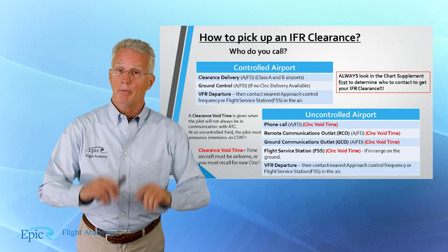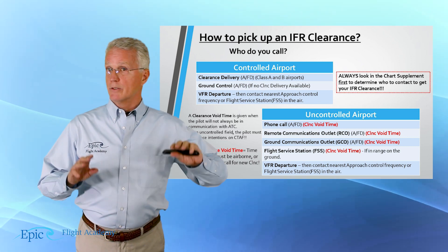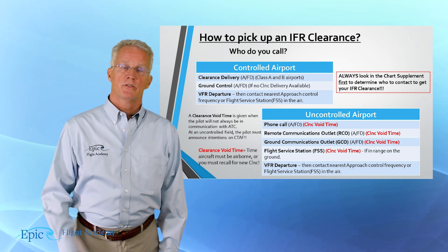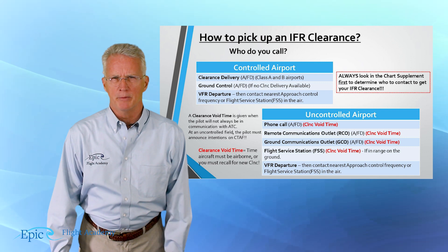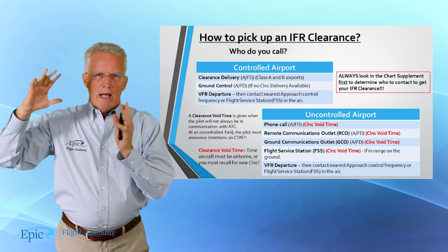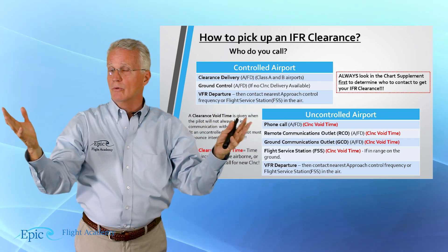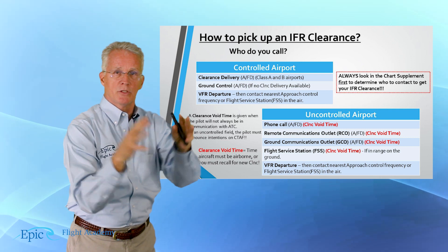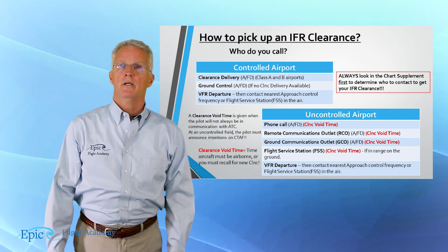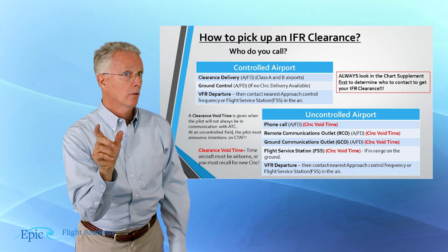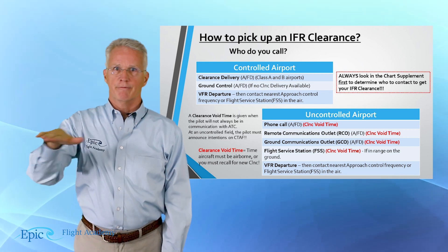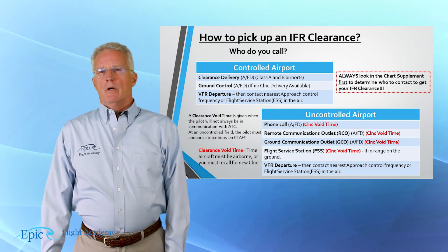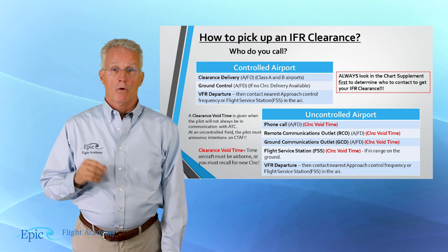What about uncontrolled airports? There are a couple of ways. First, you can pick up the clearance over the phone, and when you do, ATC will give you a clearance void time. That means they're going to allow a space for you and your aircraft to enter the IFR system, planning around you entering within a certain time window. If they don't hear from you by the end of that window, the clearance they issued is void. That is a clearance void time.